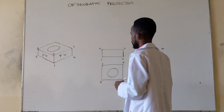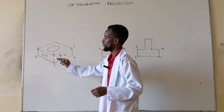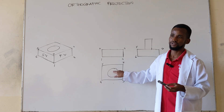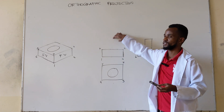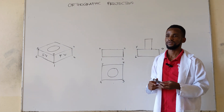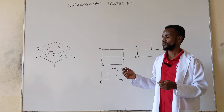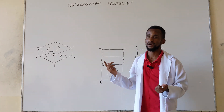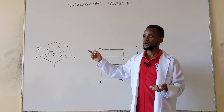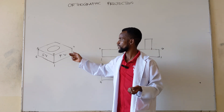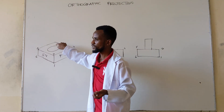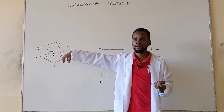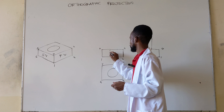So at the front we have the same view here, but how are we going to show this hole? How do we show that this is a hole and not something that was going up? We draw dotted lines — we call them hidden lines — to show that there is a hole inside here that we cannot see because it's hidden.